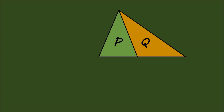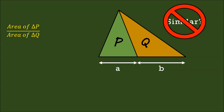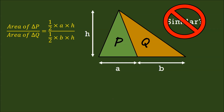Let's take a look at another pair of triangles, P and Q, with respective base lengths A and B. The question is to find the area of triangle P over the area of triangle Q. First question: are they similar? No, they're not. However, they do have a common height, and with that we can fall back on the formula for the area of triangles. The area of triangle P is half times A times H, and the area of triangle Q is half times B times H. We can simplify this fraction by cancelling the common factors, and this reduces to A over B.